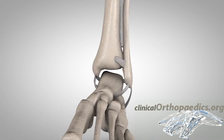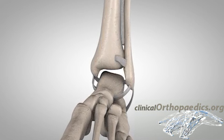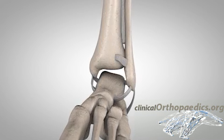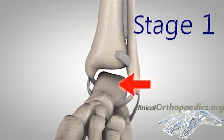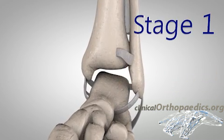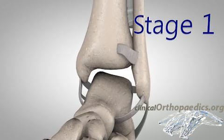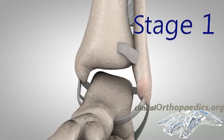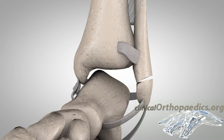With the foot in supination, the medial ligaments are relaxed and the lateral structures are injured first. If the foot is forced into adduction, a transverse lateral malleolar fracture may occur, or the lateral ligaments may rupture.